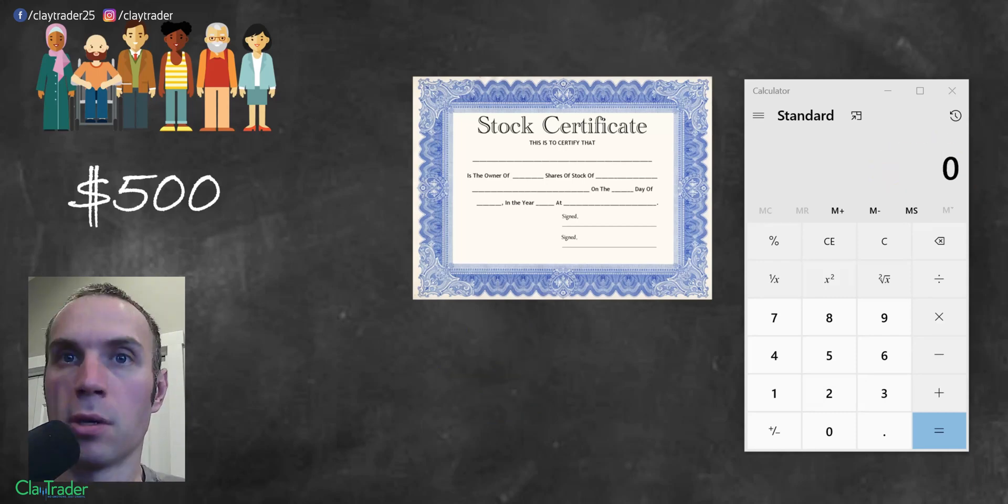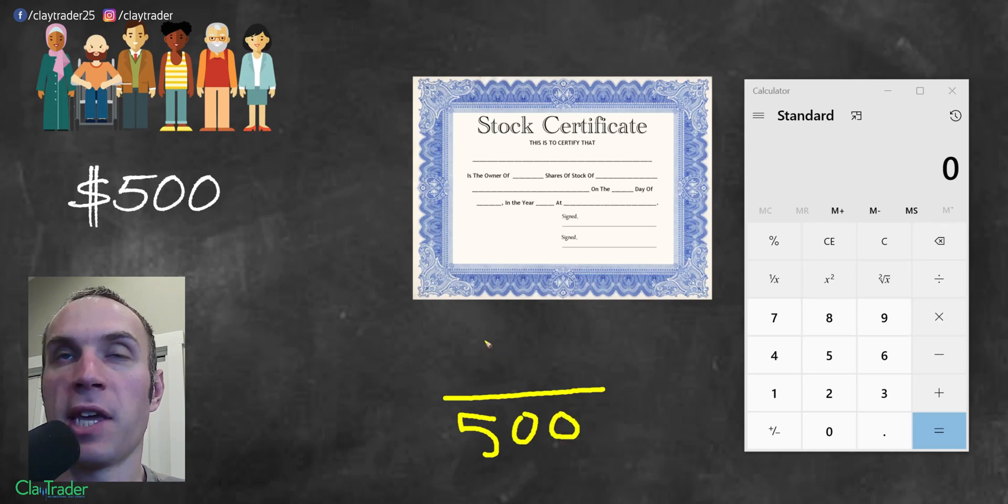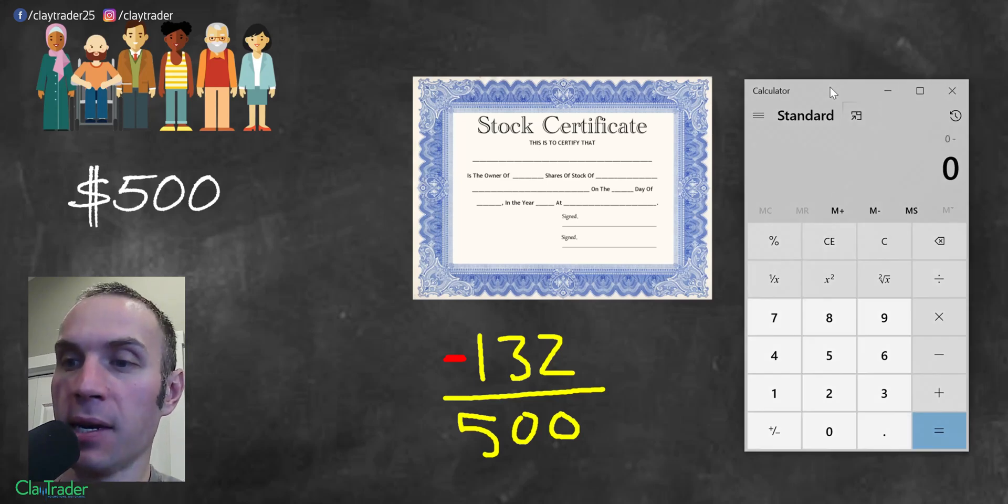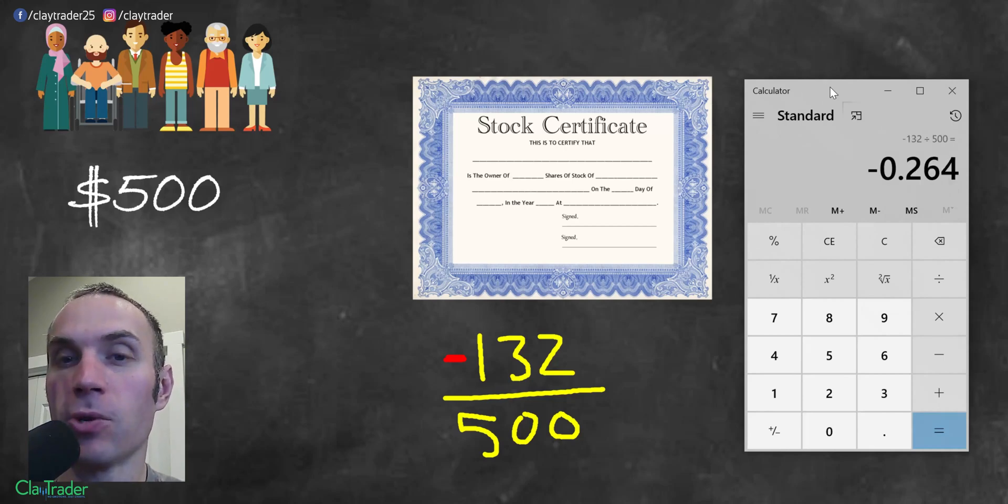But what about the flip side of things? So same exact thing. You had $500. And then you had $132. But what's the key part here? Well, the key part here is that it was a negative. So negative $132, because you were actually losing. So when we bring that over here, negative $132 divided by the total amount, you have a negative 0.264. And again, got to convert that to a decimal by 100. So in this situation, you did not have a return on investment. You actually lost. You lost, from a percentage standpoint, you lost 26.4%.